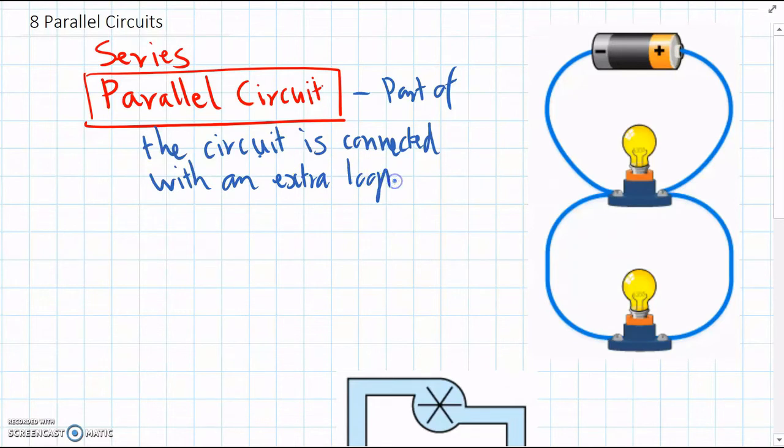And what this means is when the electrons get down to the join between the two loops, they have an option and half of them will go down one loop and the other half will continue through the loop they were on. So the current splits in half.